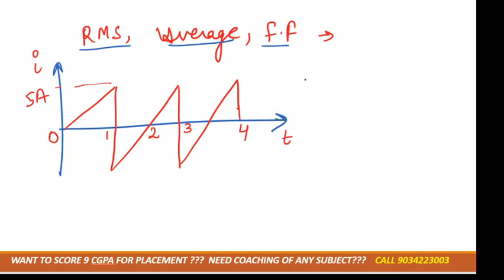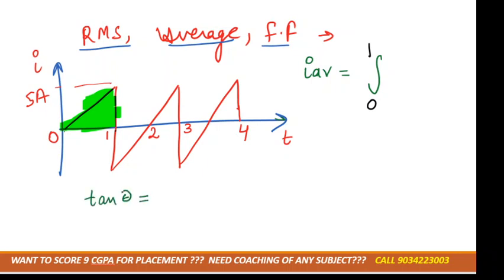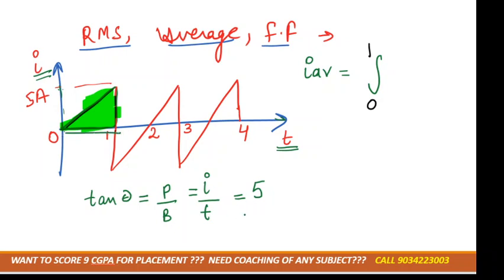Back to the question — we need to calculate I_average. The waveform goes from limit 0 to 1. To find i, we use tan θ, which for a right-angle triangle is perpendicular over base. The perpendicular is the current and the base is time. The current is 5 amperes and the time for this particular triangle is 1, so by cross-multiplying we get i = 5t.